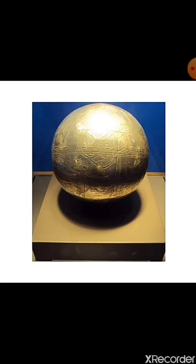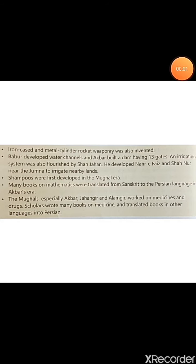Iron-cased and metal cylinder rocket weaponry was also invented. Babur developed water channels, and Akbar built a dam having 13 gates. An irrigation system was also flourished by Shah Jahan. Shah Jahan constructed canals near the Yamuna river — Nahar-e-Faiz and Shah Nahar — to irrigate nearby lands.